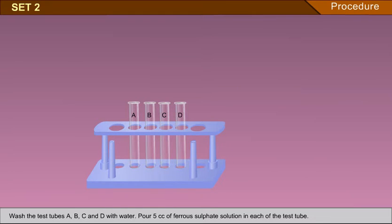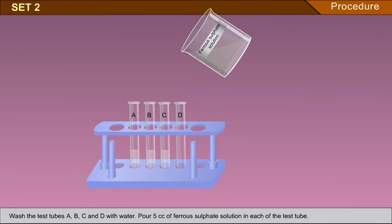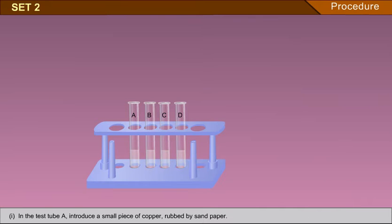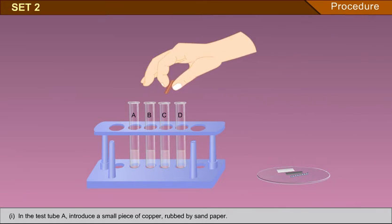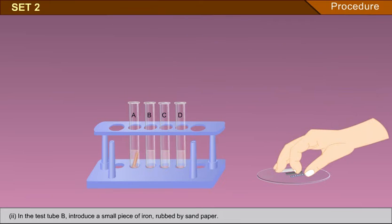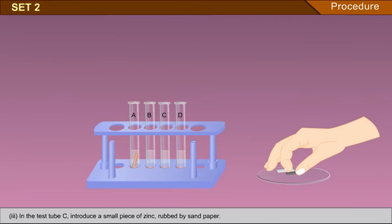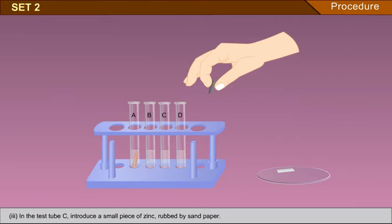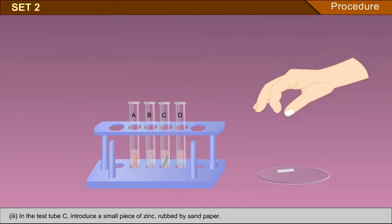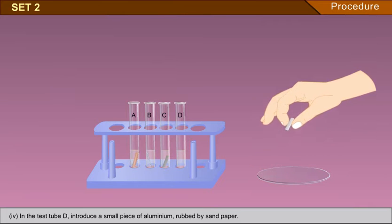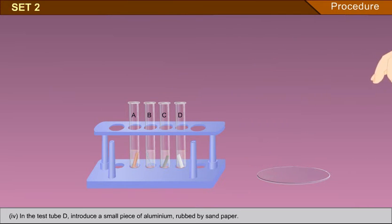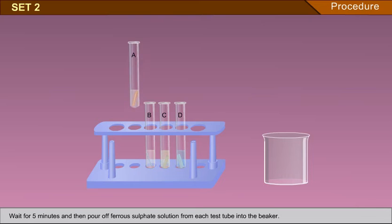Set 2: Wash the test tubes A, B, C and D with water. Pour 5 cc of ferrous sulphate solution in each test tube. In test tube A, introduce a small piece of copper rubbed by sandpaper. In test tube B, introduce a small piece of iron rubbed by sandpaper. In test tube C, introduce a small piece of zinc rubbed by sandpaper. In test tube D, introduce a small piece of aluminium rubbed by sandpaper. Wait for 5 minutes and then pour off ferrous sulphate solution from each test tube into the beaker.